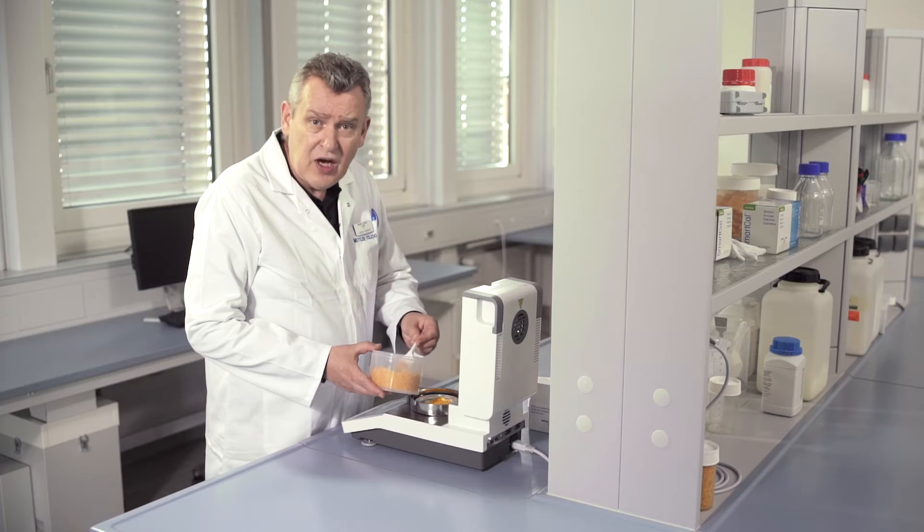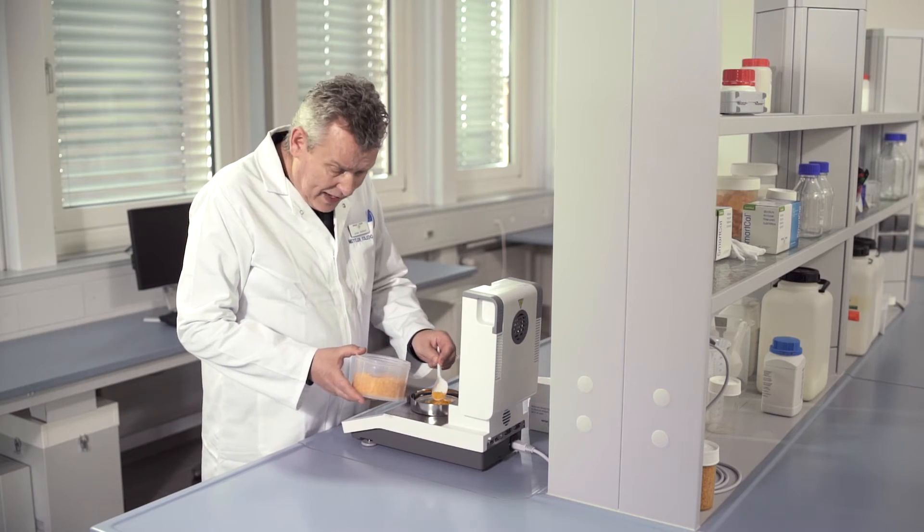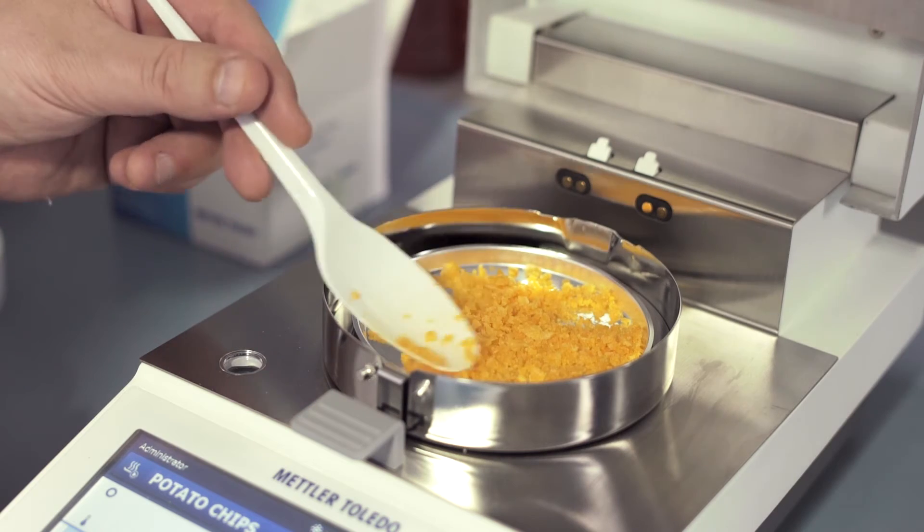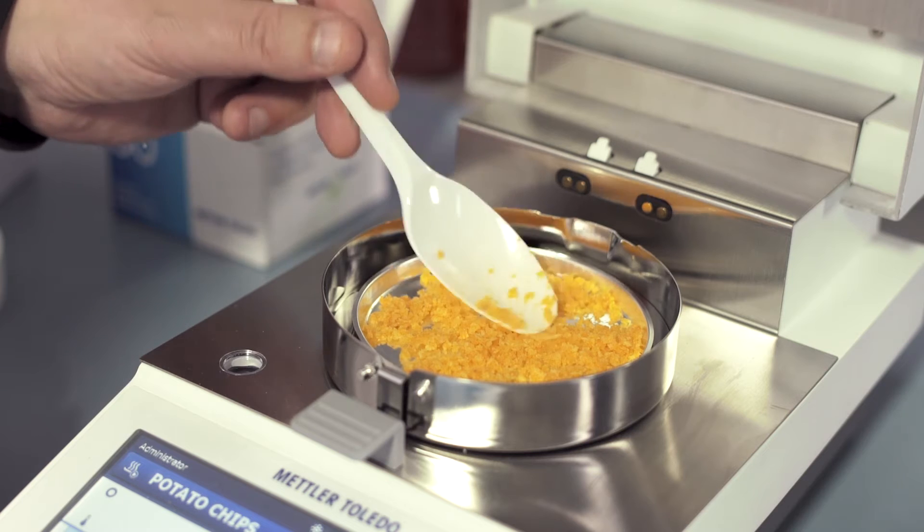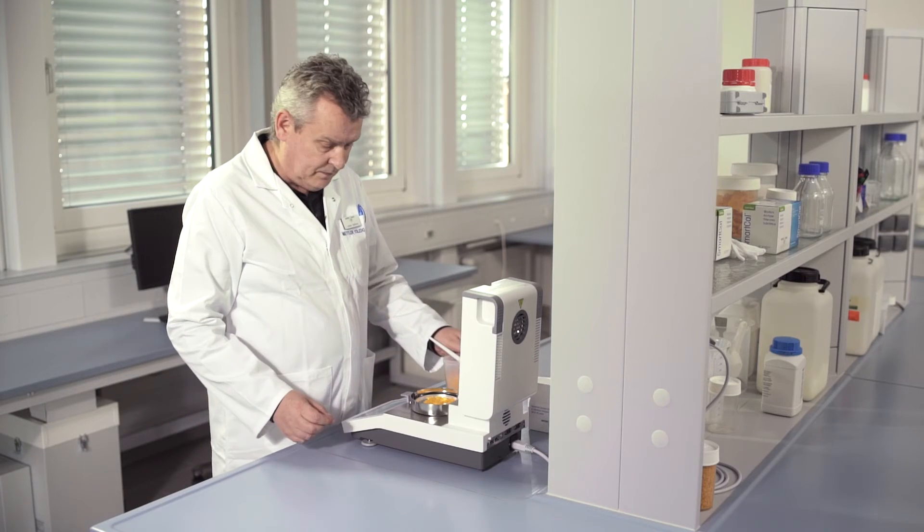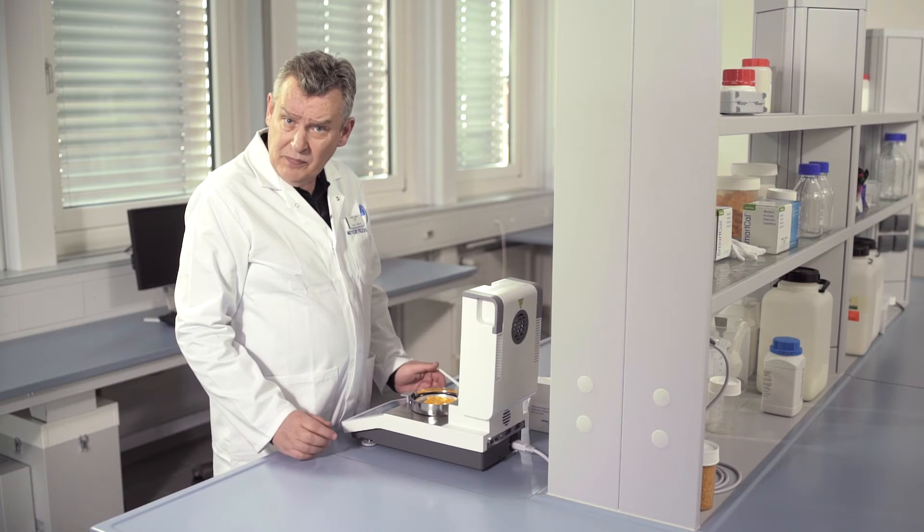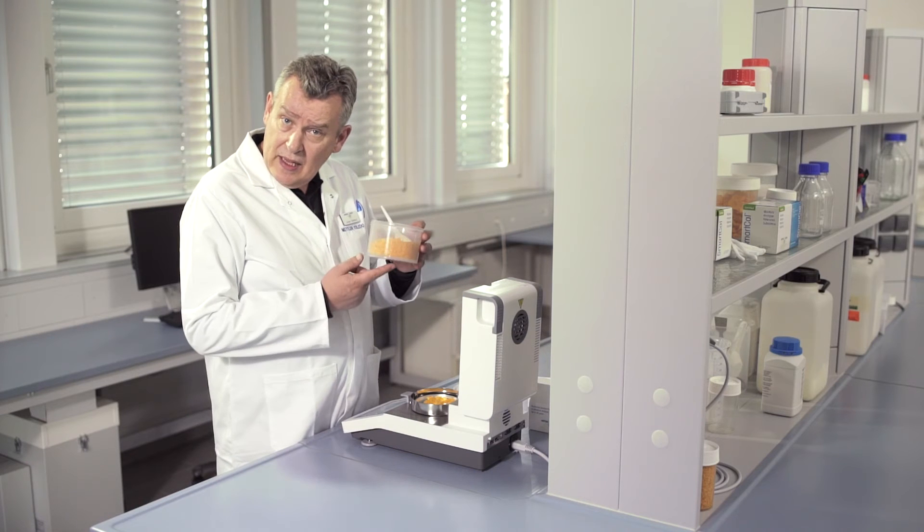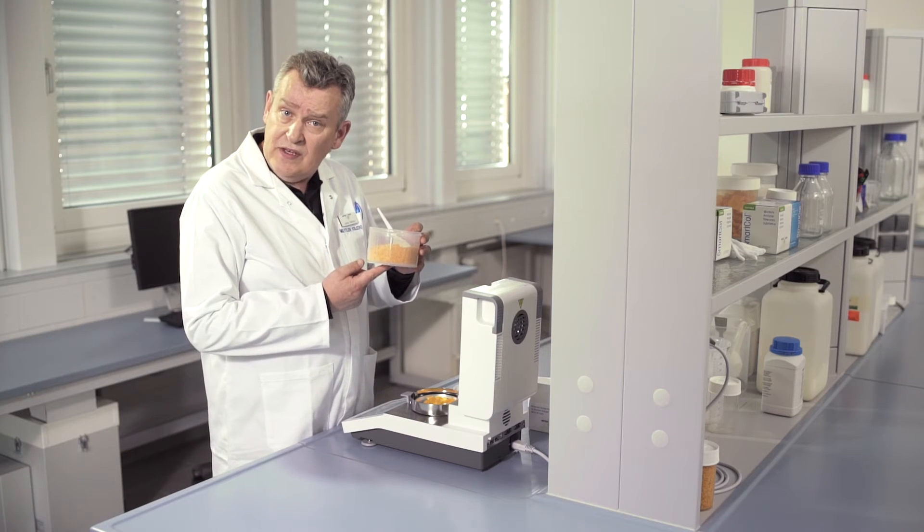Spread your sample around the pan evenly so that you create a thin and even layer to ensure uniform sample drying. For some samples, it may be necessary to crush or grind them up, as I have done here with these potato chips.